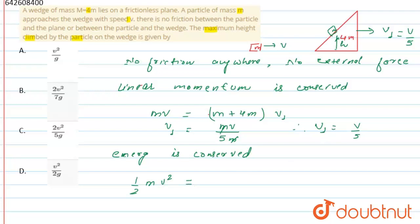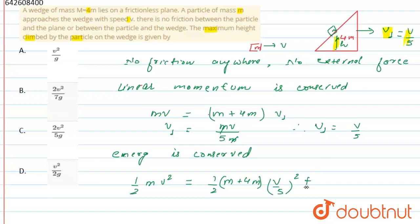Now the body has achieved potential energy. The small mass m has potential energy mgh, and the whole system is moving with a final velocity v_f. So the final energy is equal to half times (m plus 4m), that is, half times 5m times v_f squared, plus the potential energy mgh.